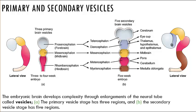With the formation of the primary brain vesicles, you have the beginnings of our nervous system. You can see here the forebrain, the midbrain, and the hindbrain. Somewhere around week five of development, the primary brain vesicles have changed position, and the forebrain and hindbrain have further subdivided to form secondary brain vesicles. The midbrain does not significantly change during development.